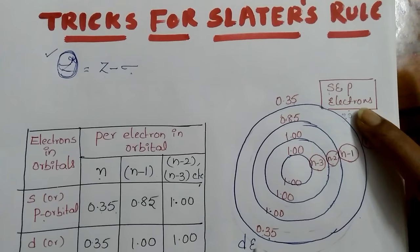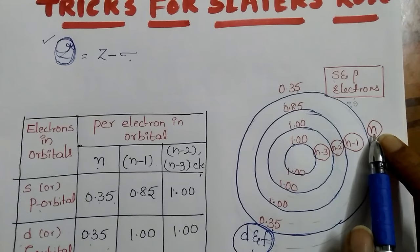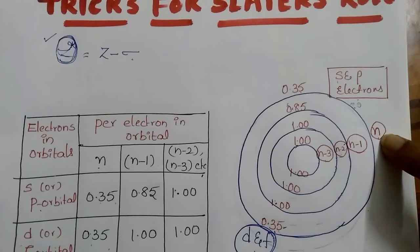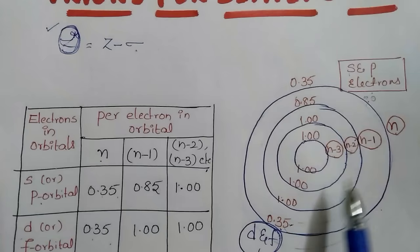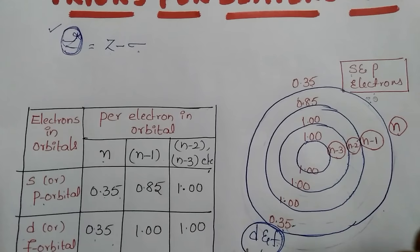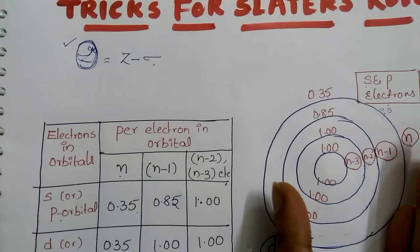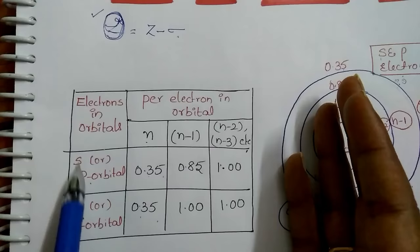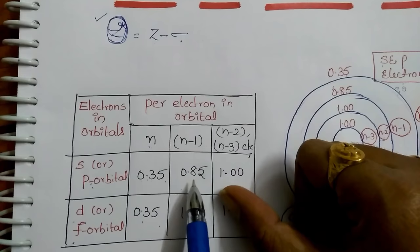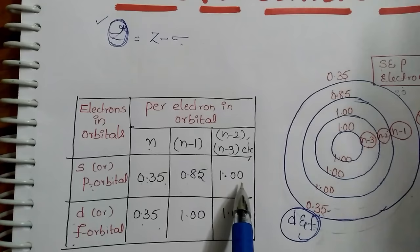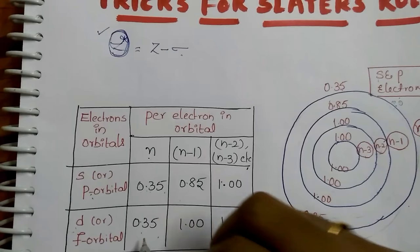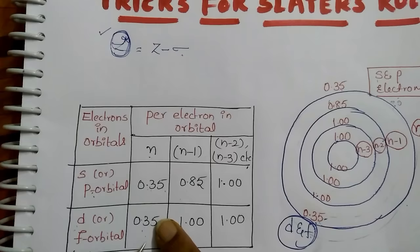For D and F electrons: the electron in the N shell contributes 0.35 per electron. For N minus 1, N minus 2, N minus 3, and all remaining inner shells, the contribution is 1. In summary, for D and F orbitals, only electrons in the same D or F group contribute 0.35; all others contribute 1. I am giving this in tabular form for easy reference: S/P: N → 0.35, N−1 → 0.85, N−2 and beyond → 1. D/F: same group → 0.35, all others → 1.